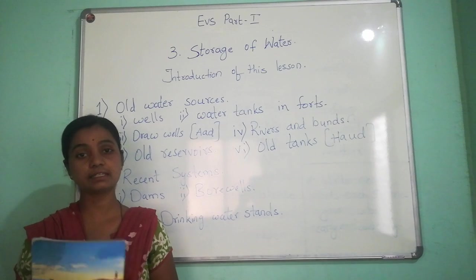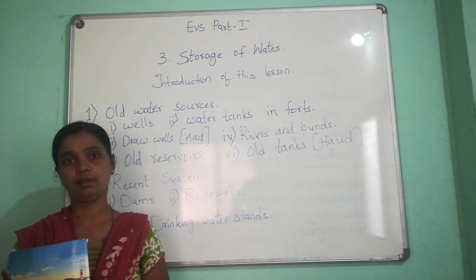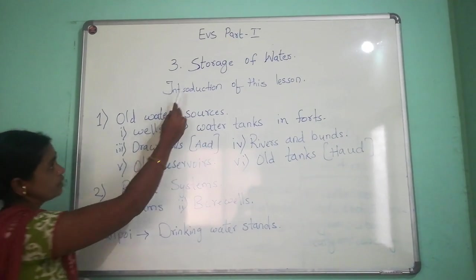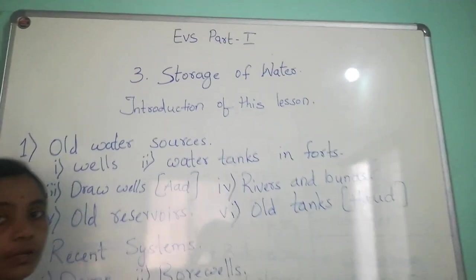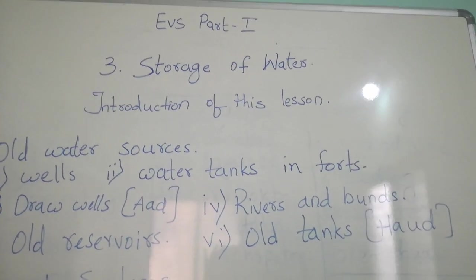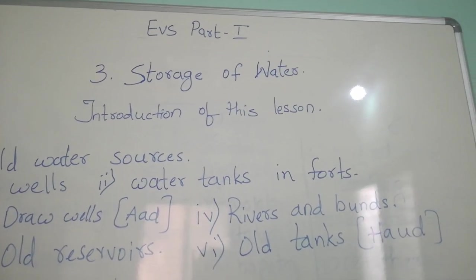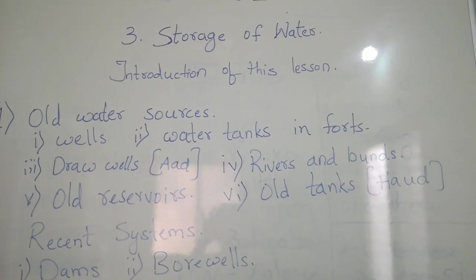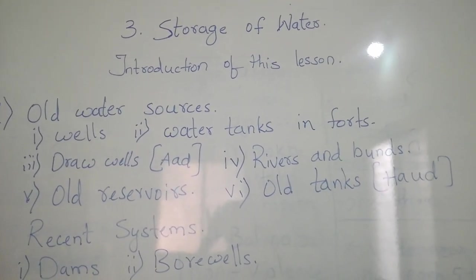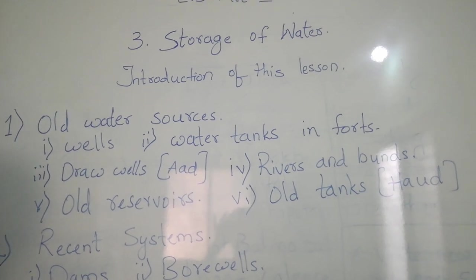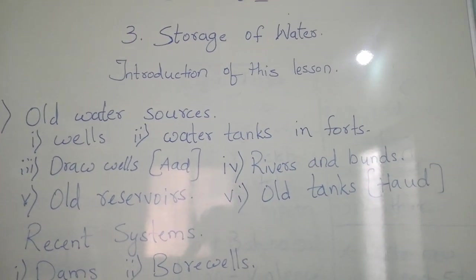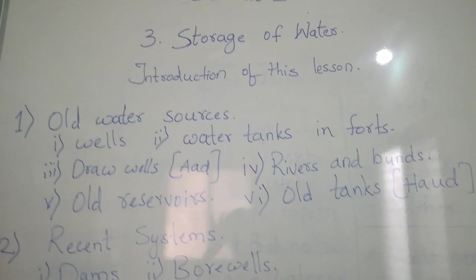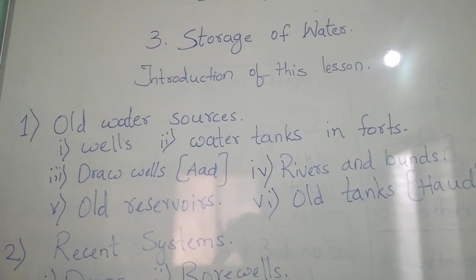What is the name of our third lesson of EBS Part 1? The lesson is Storage of Water. We are going to discuss the storage of water. Now, all of you know where water comes from? Yes, of course, water comes from rain. Now let us see about the various types of storage of water.